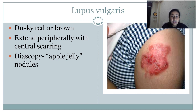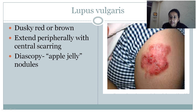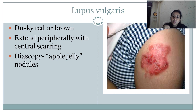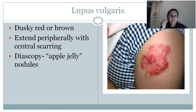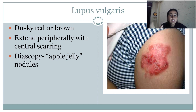How does lupus vulgaris appear clinically? It appears as a dusky red or brown plaque with central clearing. They have an active border and centrally they show scarring and clearing. On diascopy, there is a classical appearance called apple jelly nodules. You can get a question asking: a patient has a red plaque, on diascopy there were apple jelly nodules — what is the diagnosis? The answer is lupus vulgaris. This is the classical picture: a dusky brown appearance with central scarring.